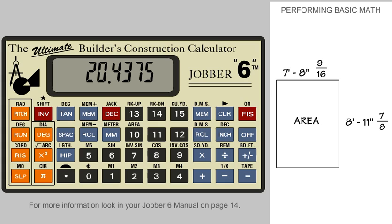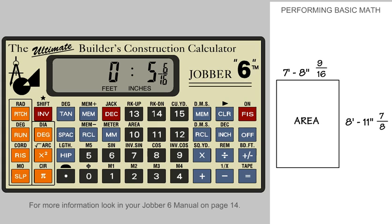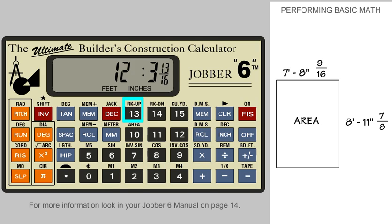Now let's look at how to work with the plus/minus key and the electronic tape. First, let's clear the calculator and do some basic math. Enter 5 feet, 6 and 7 sixteenths inches. Add 12 feet, 3 and 13 sixteenths. Subtract 10 and 11 sixteenths.